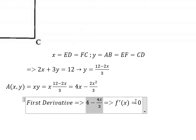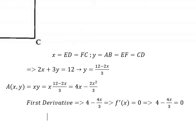So we put this equal to zero and we can find the x value. The first derivative equals 4 minus 4x/3 equals zero, which gives x equals 3. This is number three. So we can find y here, which is number two.